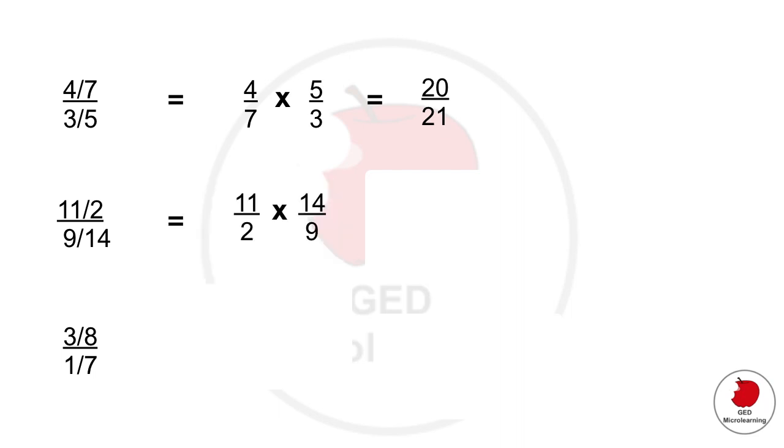Second problem you would do this, same sort of scenario. You end up with 154 over 18 and finally in the last one you end up with this. So notice that you have in the bottom you have 1 7th and when you flip that fraction over you end up with 7 over 1 or 7.